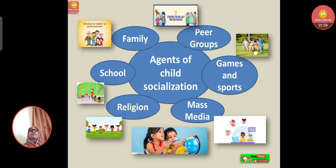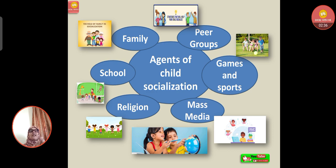Now let's understand the agents of child socialization. Number one: family. For children, the process of socialization begins in the family itself. Family is the first source — the first school — through which a child commences their social communication. The child starts speaking and talking to mother, father, siblings, and other people.